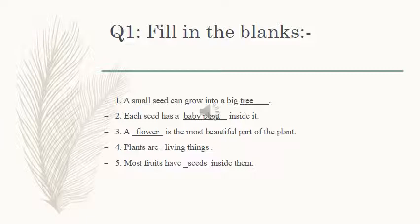Baby plant. B-A-B-Y P-L-A-N-T. Number 3: A dash is the most beautiful part of a plant. What is the most beautiful part of a plant? Flower. F-L-O-W-E-R. Number 4: Plants are dash. Plants are living things. L-I-V-I-N-G living.